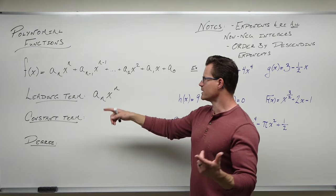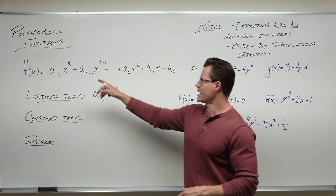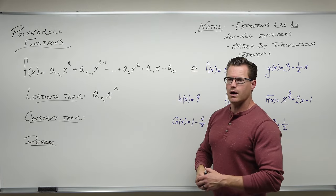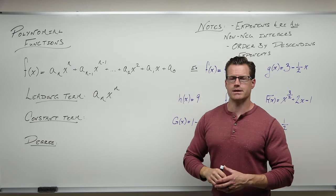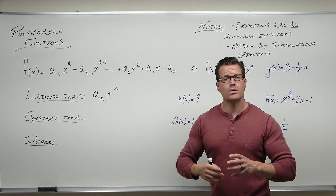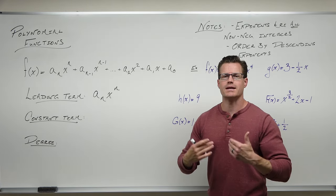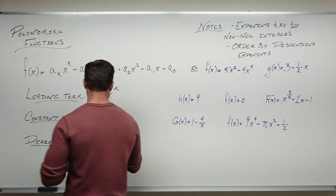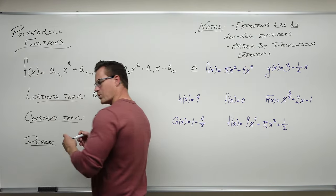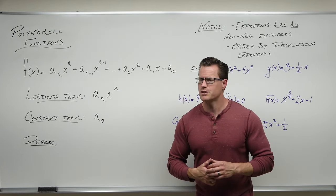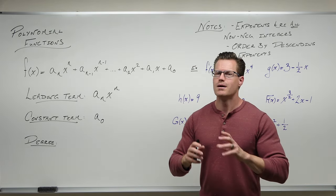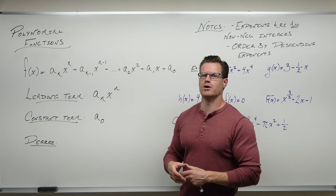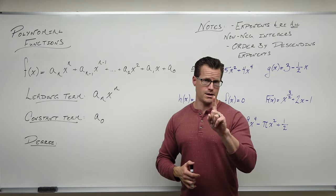The constant term should be last. It's the only one without an x on it — our x's are going to have exponents that sort of expire by the end. You don't have to have a constant, but if you do, it should be last. So a_0 is our constant term. We wouldn't consider it to be a coefficient because it's not a variable term. There should be only one constant term — because constants are always like terms, so if you have more than one, you can add them.